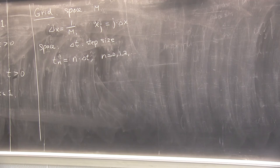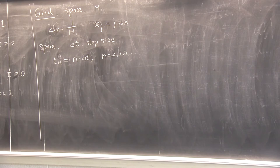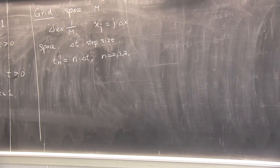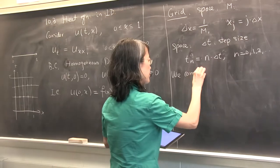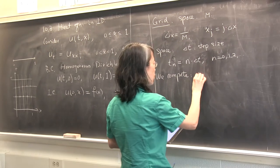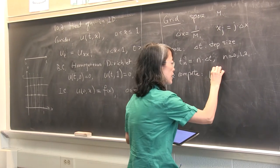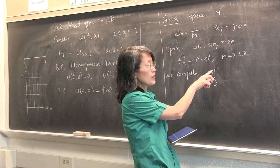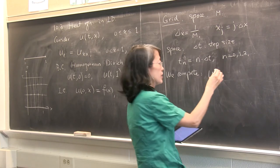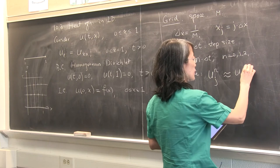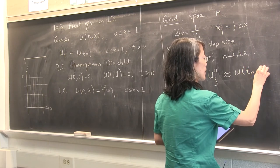What we'll be doing is still similar to the other problems. I have a final computing time, I cut into four grids in the x direction, and cut into some grid in the T direction. I compute approximate solutions only at the grid points — nothing in between, just discrete values. I call these U with index J in space, and N in time (N is written as a superscript). This is the approximation to the exact solution at T_N and x_J.